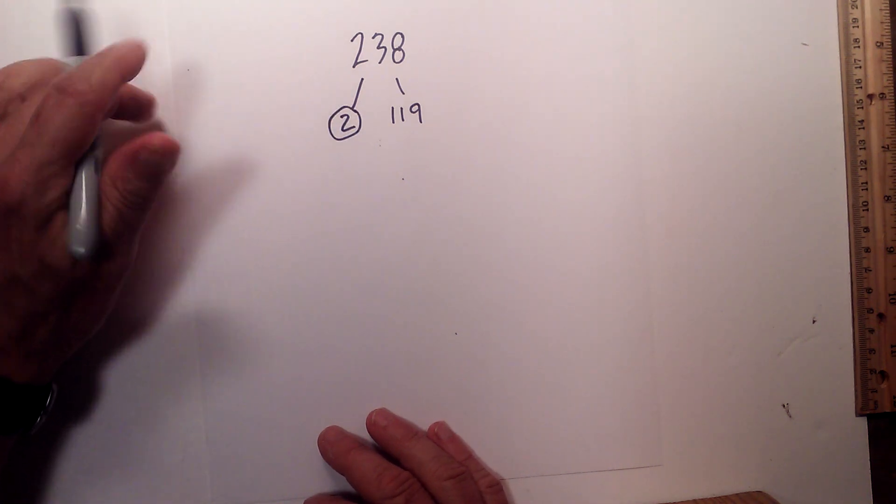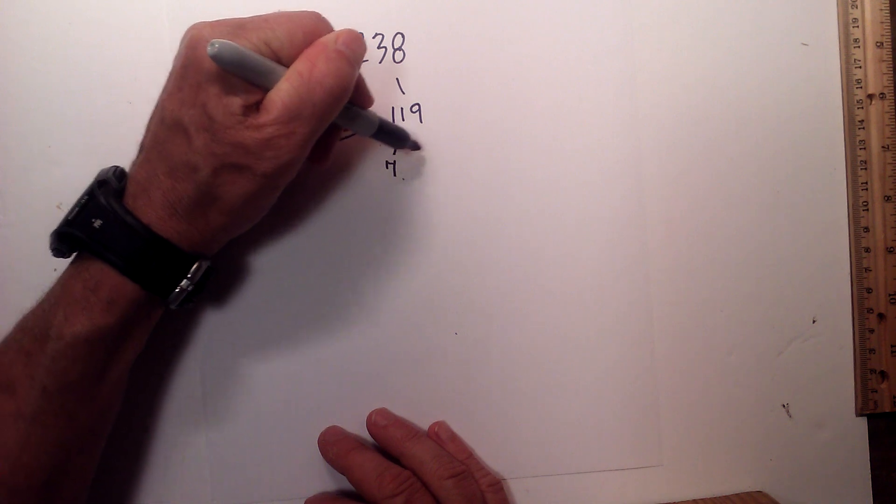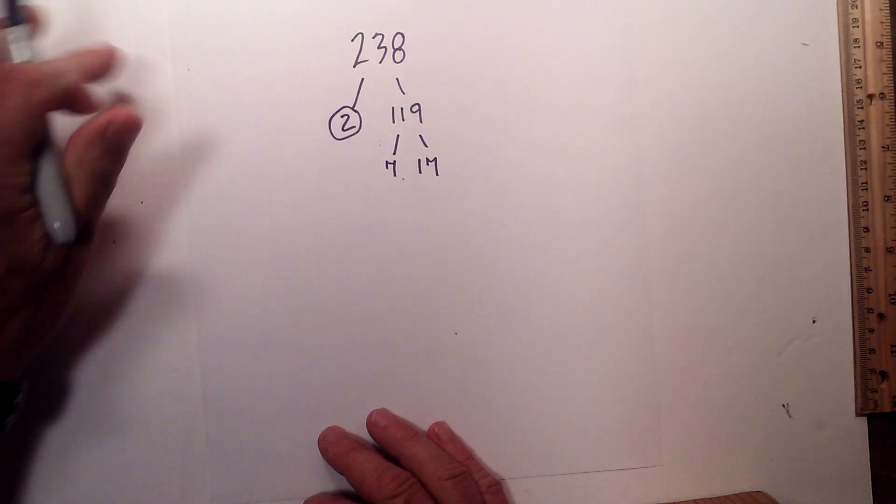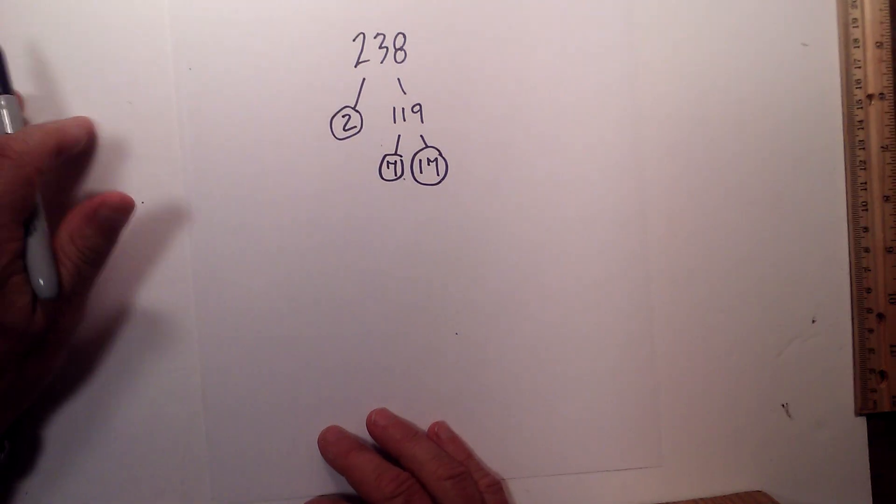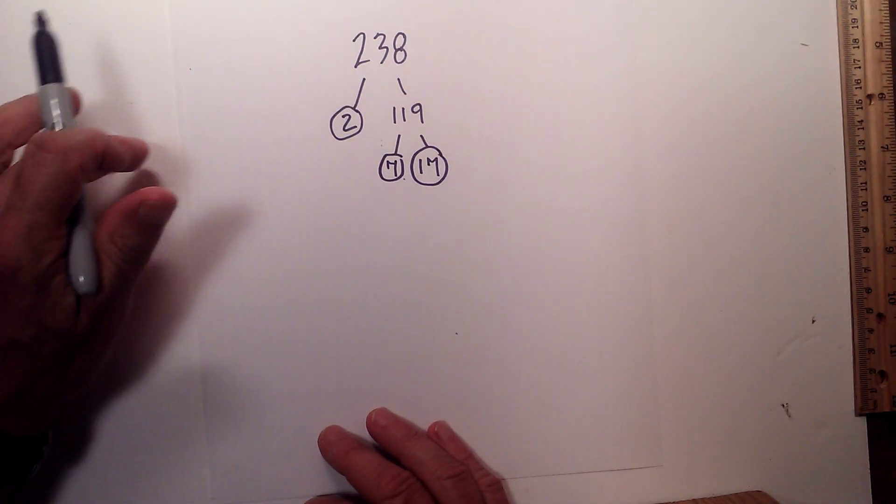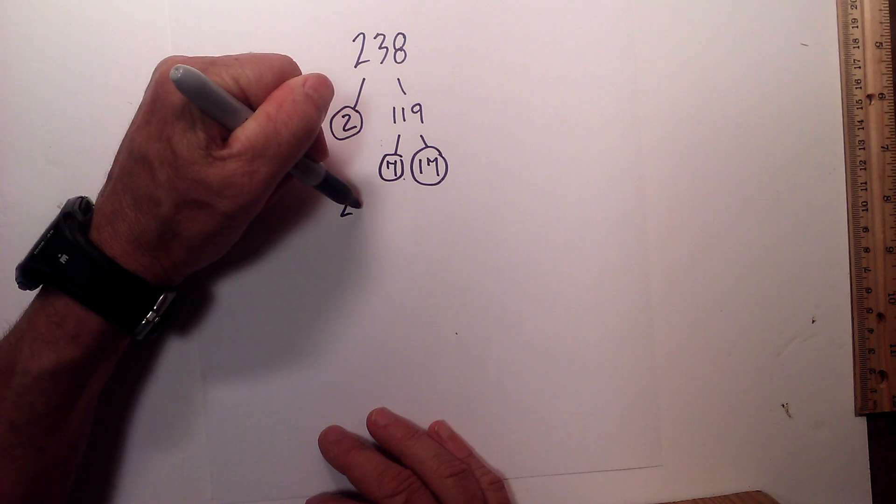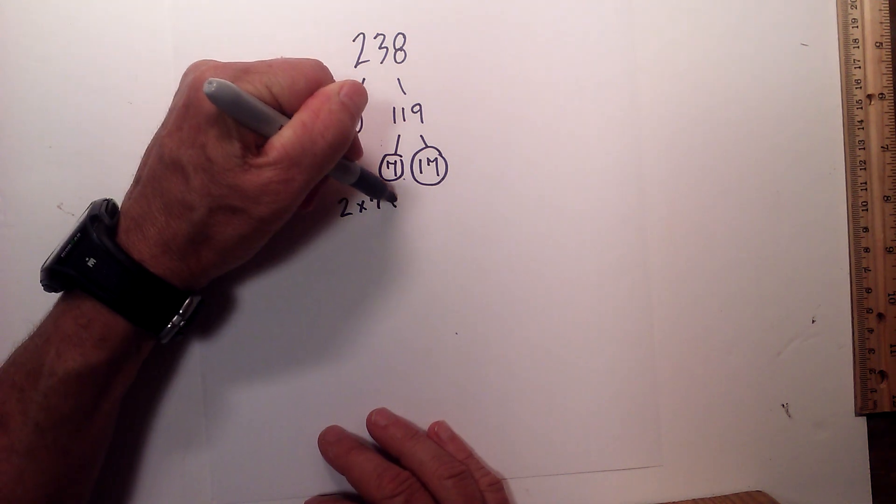I will circle the 2 because it is prime. 7 times 17 equals 119. They are both prime, so the prime factorization, because we are down to just prime numbers, is 2 times 7 times 17.